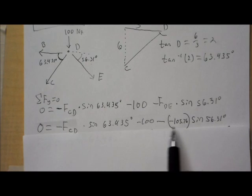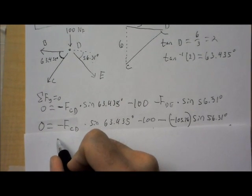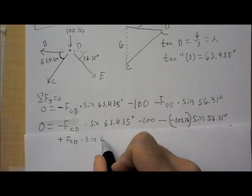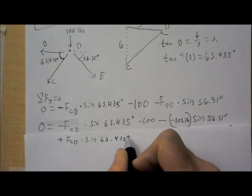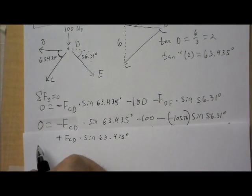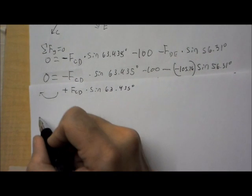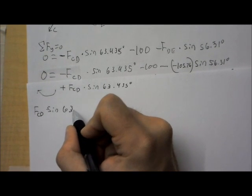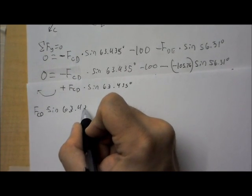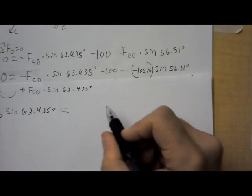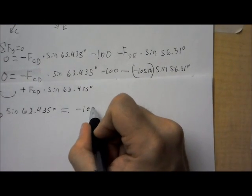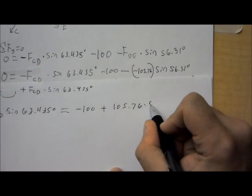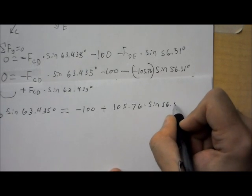Okay. So, now that I have that all written out, what I want to do is move this term over plus FCD. And this is part of that term also. Times sine 63.435 degrees. So, that's going to come over to this side. I'm also adding it to that side. So, FCD times sine of 63.435 degrees equals everything else. It's going to equal negative 100. You could write plus 105.76 because that's negative negative. Times sine 56.31 degrees.